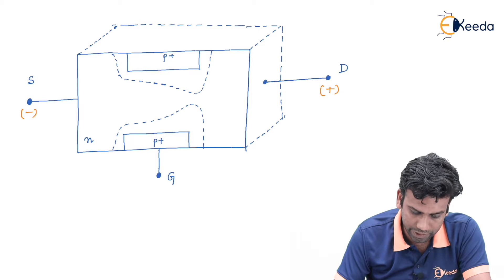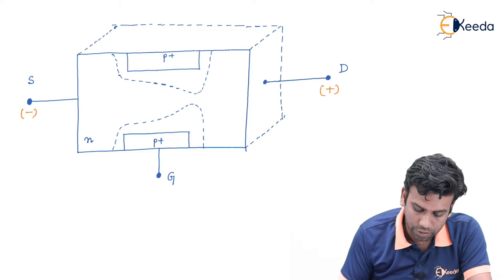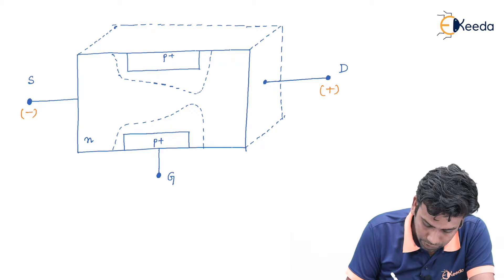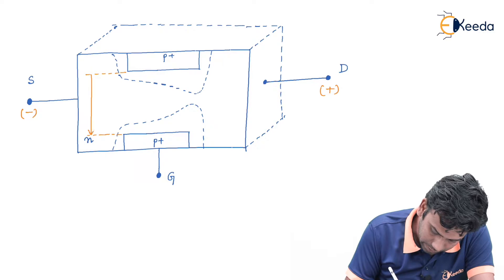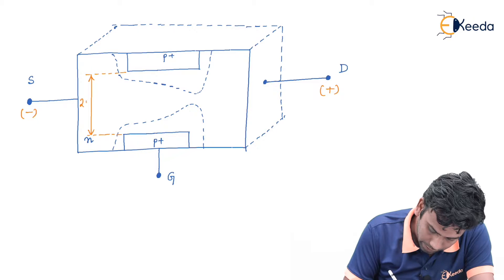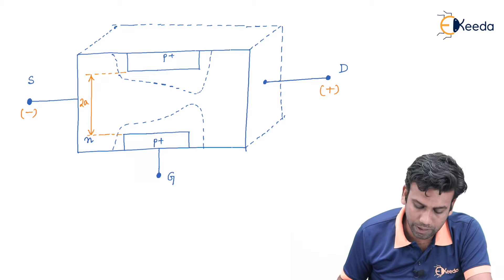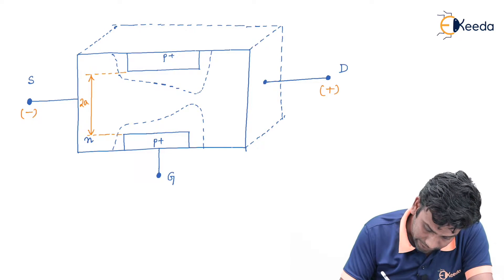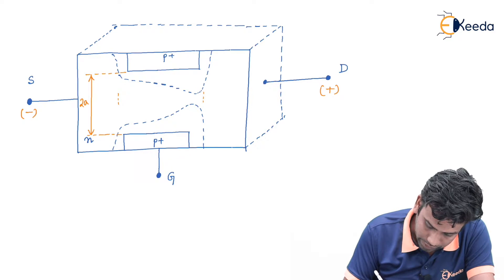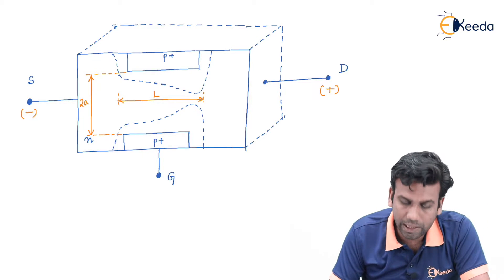Now let us define some parameters. Before the application of Vsd, the actual width of the channel is defined as 2a. So 2a is the actual width of the channel before the formation of the depletion region. The channel length is defined from one end to the other end and is denoted as capital L. So capital L is the channel length.